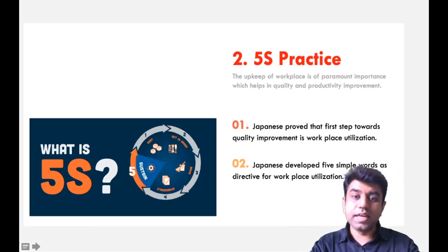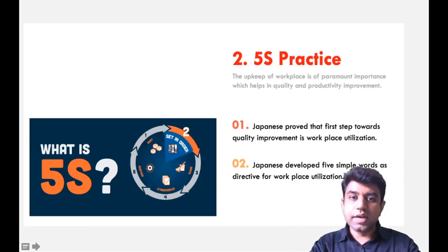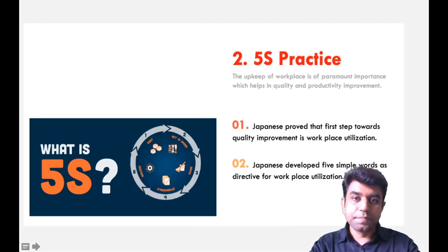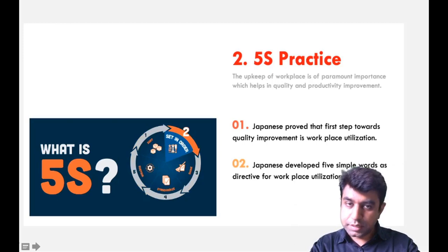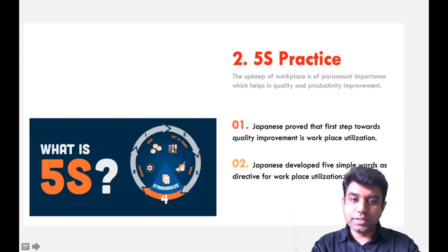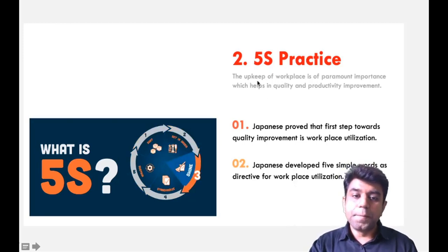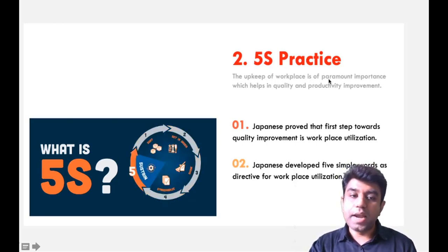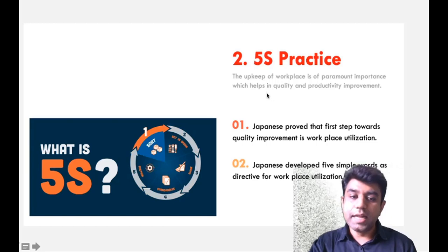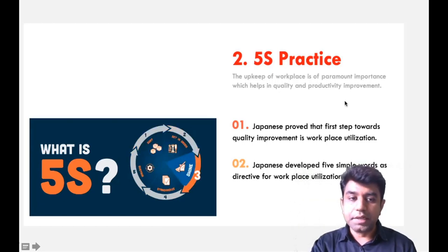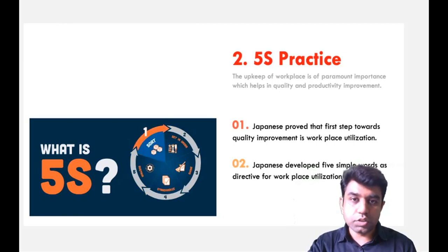As the word 5S suggests, there are at least 5 different words starting with the letter S, and each word has some meaning. If you focus on that meaning, then you can improvise the quality — that's the basic fundamental. 5S suggests that the upkeep of the workplace is of paramount importance, which helps in quality and productivity improvement.